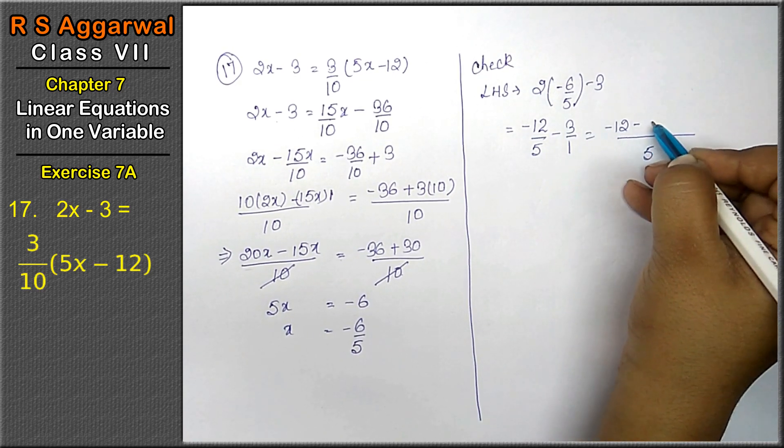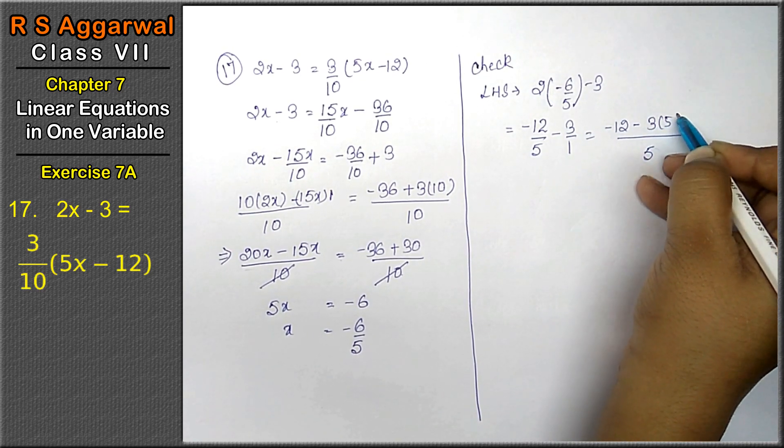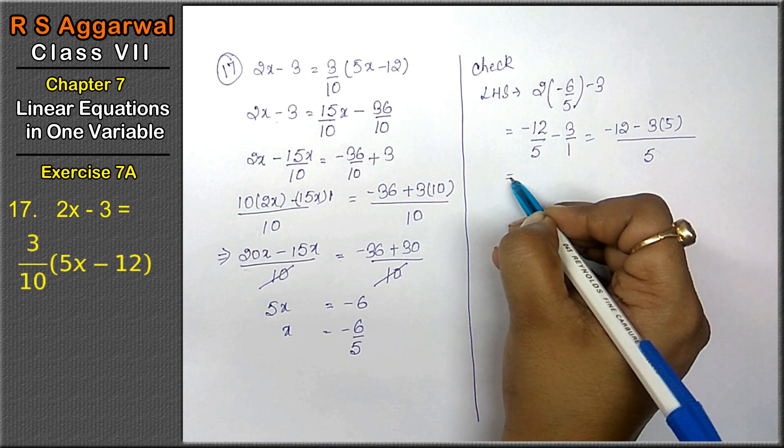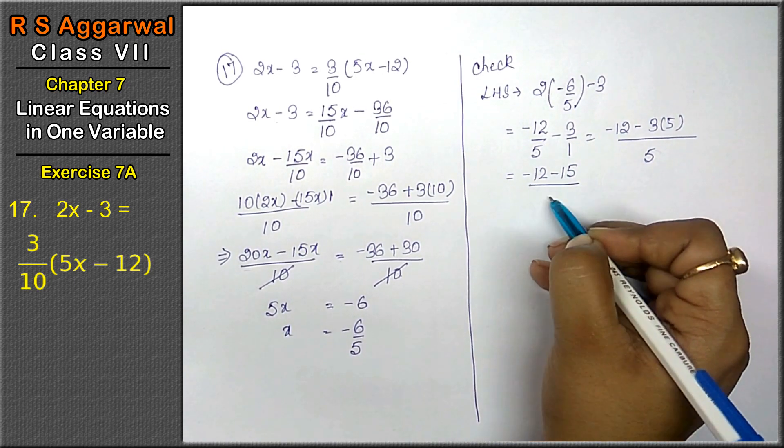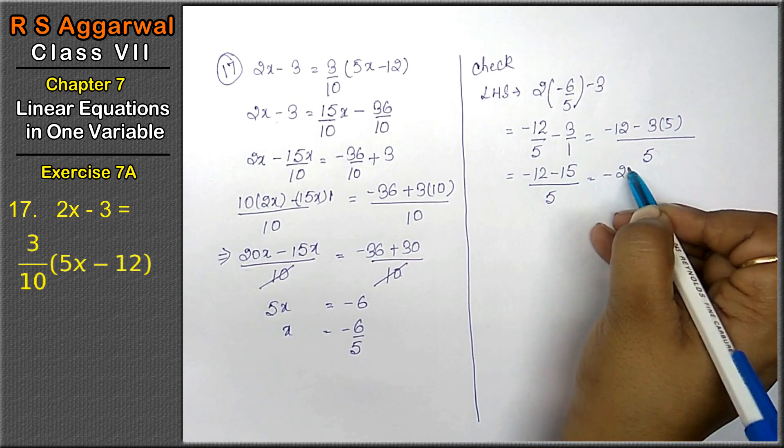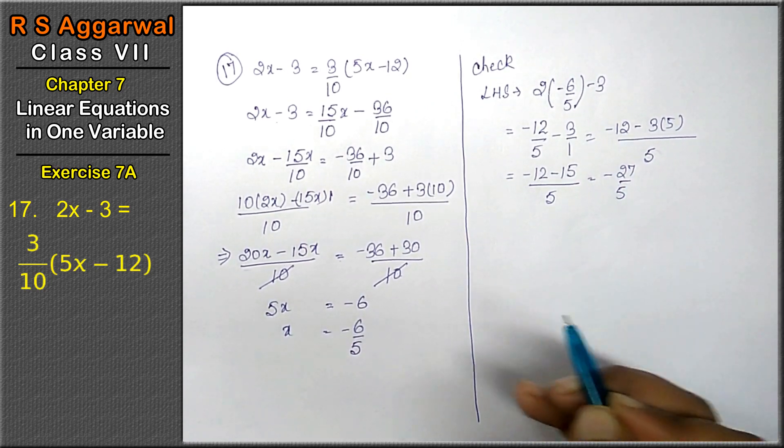Minus 12 minus 3 into 5. Now, minus 12 minus 15 upon 5. Minus 27 upon 5 is the answer.